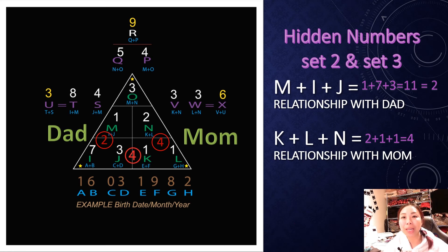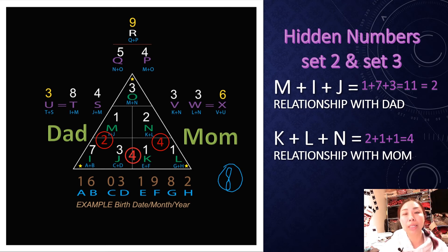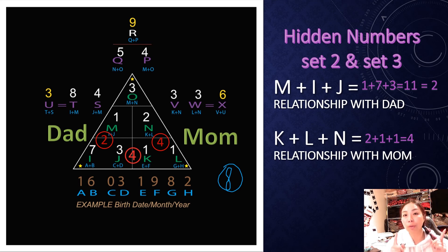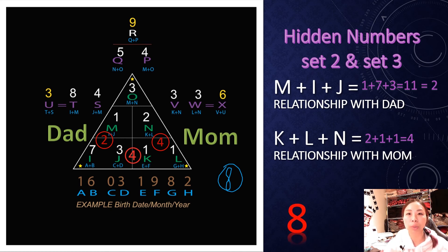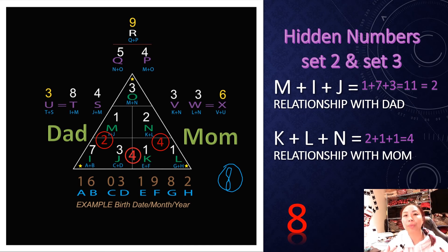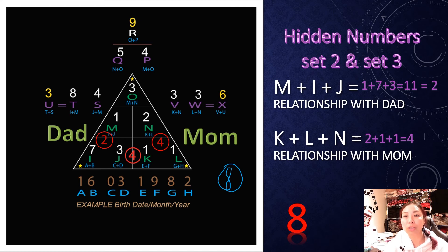If your number adds up to be an 8 with either one of your parents, that means you feel pressure talking with them, or they feel pressure talking with you. It could reflect that either one of you has a superior status, education, or background of some sort, and when you're talking to each other, there's always this invisible stress or pressure.